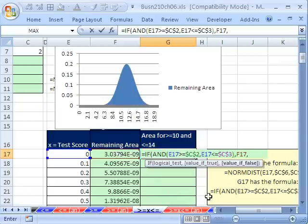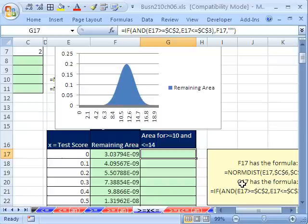Comma. What's the value if true? That. Value if false, double quote, double quote, just like we've done before. Close parentheses. Control Enter and then double click and send it down.